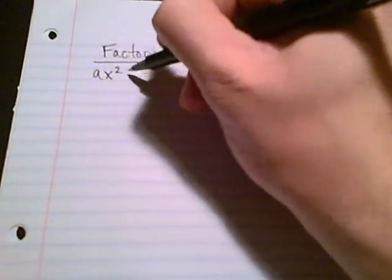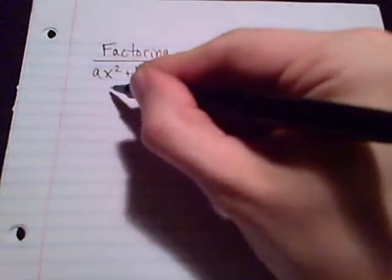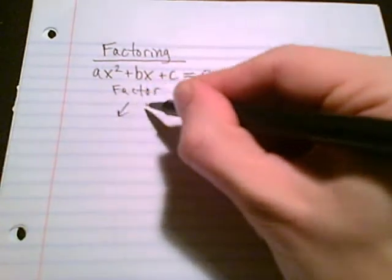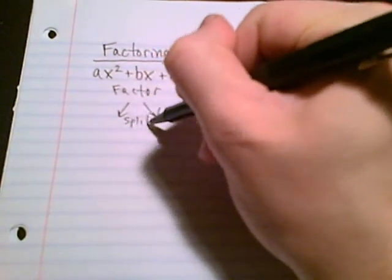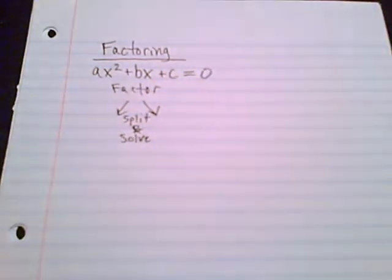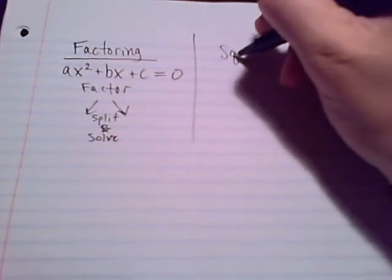Before we move on to the other methods, let's do a quick recap of what we have so far. We have solved by factoring. When we did solve by factoring, it needed to be in standard form with all of our terms on one side equal to zero. We would factor what we had here, and then we did this sort of split and solve.